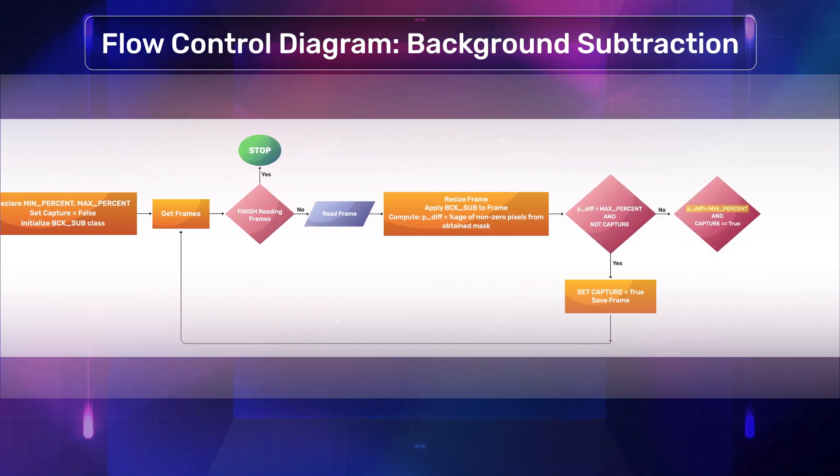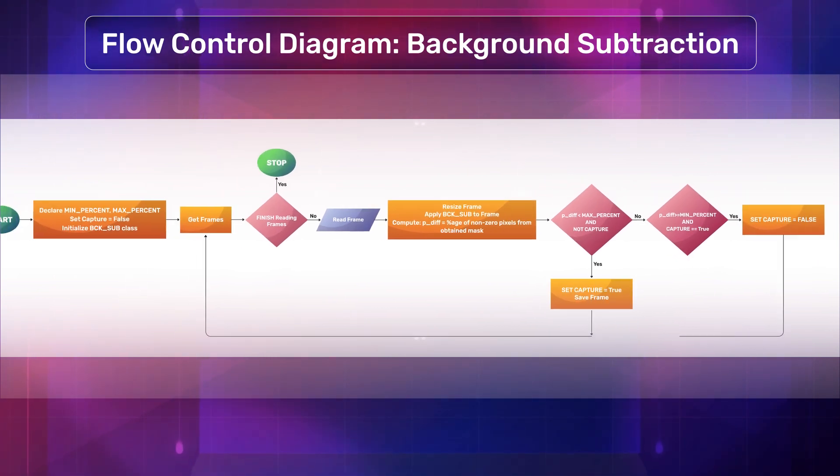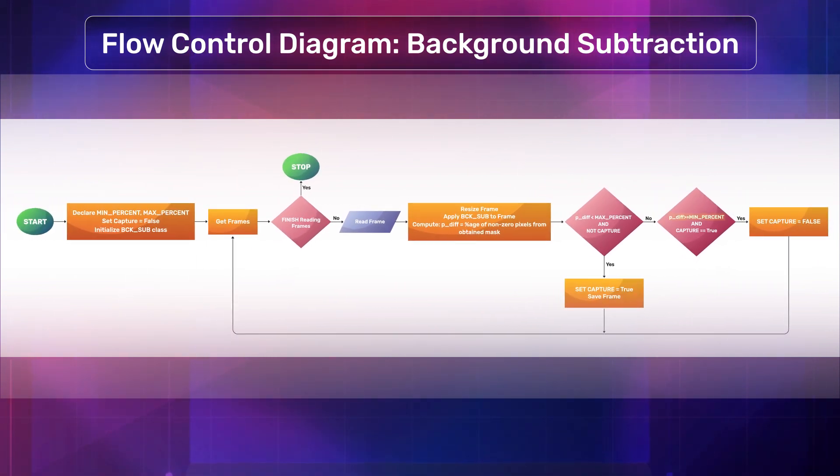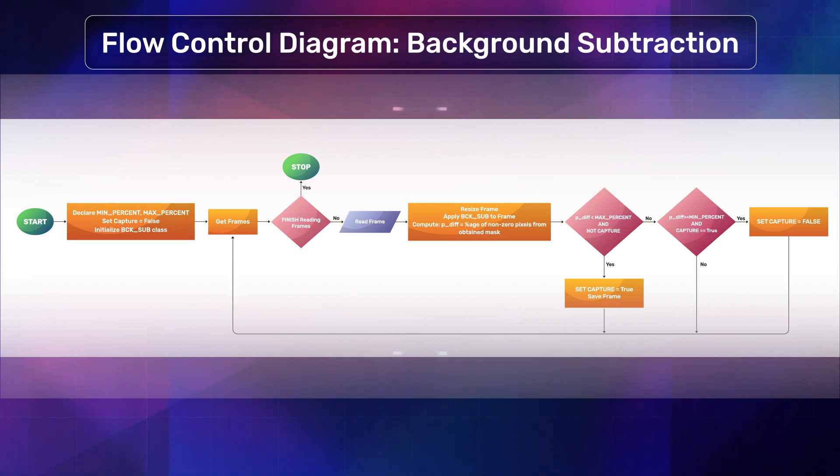Otherwise, if the percentage is greater than the minimum threshold and capture is true, we will set capture to false and continue to read the next frame. This condition is useful till the motion decreases. Otherwise, we move on to the next video frame. This will continue to loop until we reach our stop condition which is the end of the video.